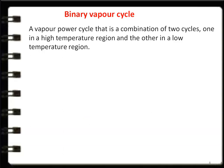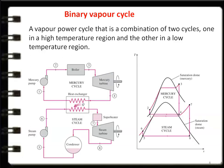Binary vapor cycle is a vapor cycle that is a combination of two cycles — one operating in the high temperature region and the other in the low temperature region. The popular combination is the mercury cycle combined with the steam power cycle. Look at the layout diagram and the temperature-entropy diagram for the binary vapor cycle, which is the mercury-steam cycle. The high temperature cycle is the mercury cycle and the low temperature cycle is the steam cycle.